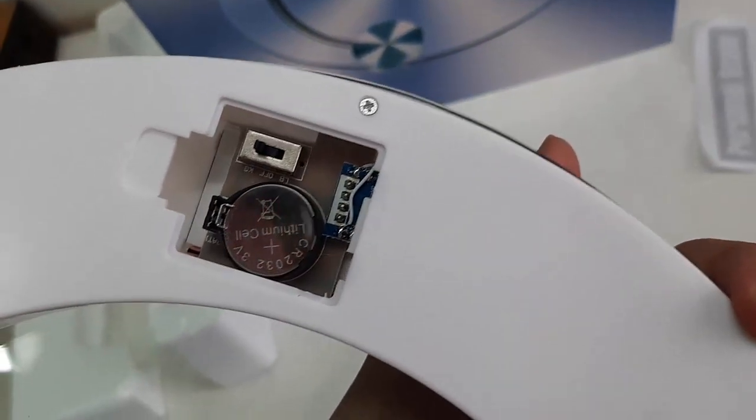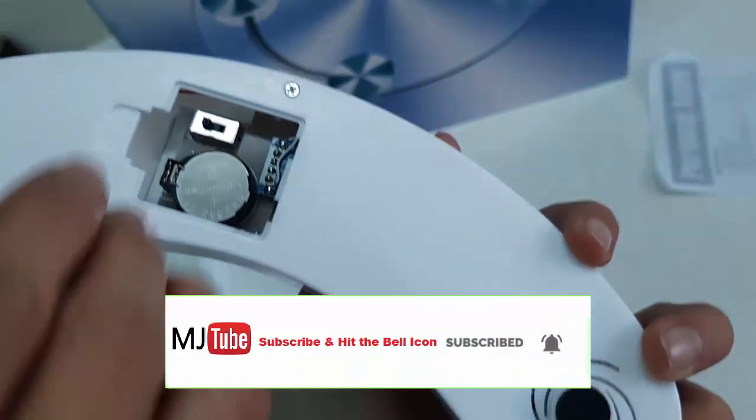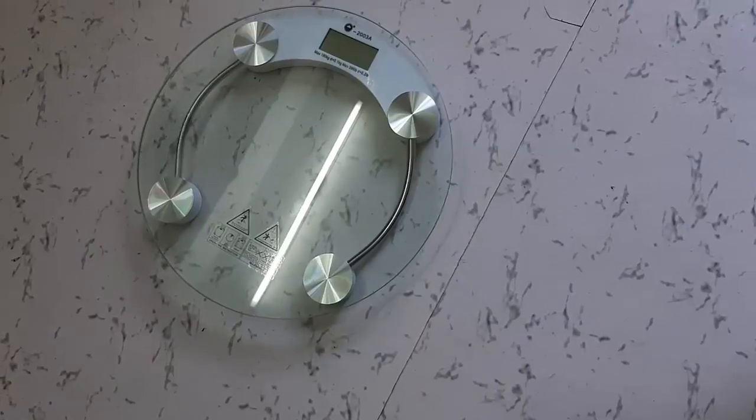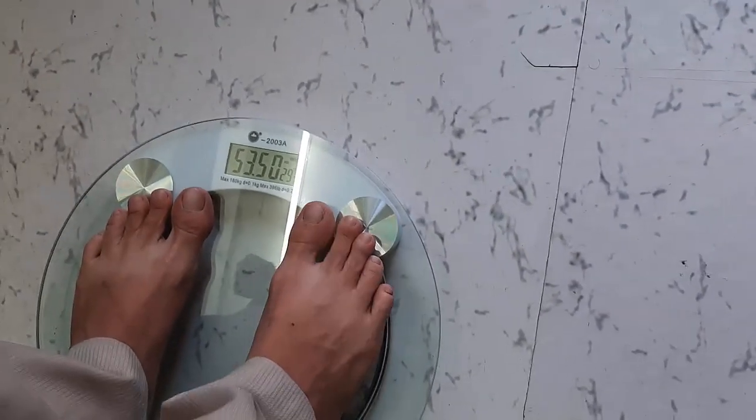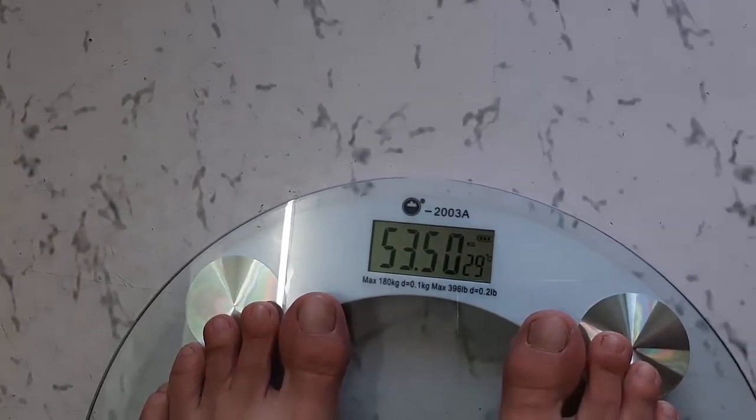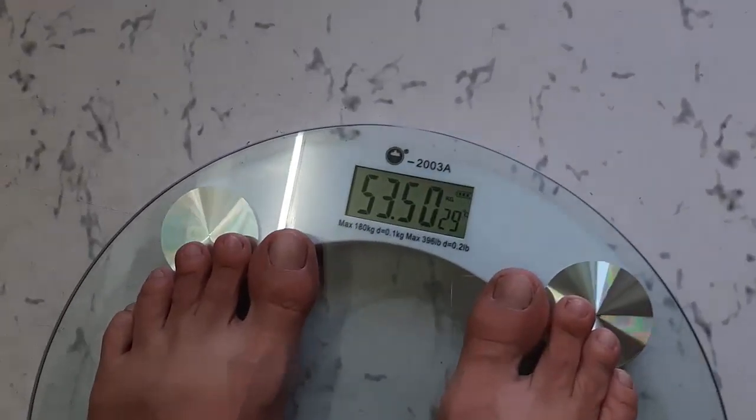Now let's test its accuracy and see how it works. Okay, so the weight is 53.5 and the room temperature is 29 degrees Celsius. Good.